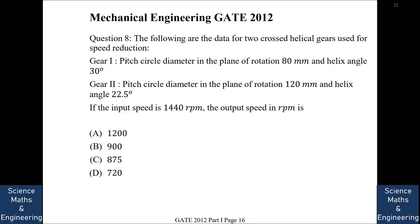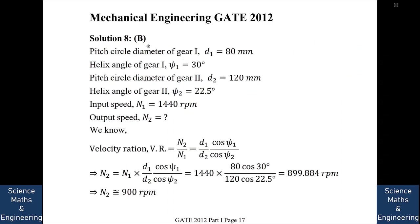For two crossed helical gears used for speed reduction: the pitch circle diameter in the planar rotation is 80 mm and the helix angle is 32.5 degrees. Using the velocity ratio formula N2/N1 = (D1/D2)·(cos φ1/cos φ2), and substituting the helix angle and pitch circle diameter values, we get N2 = 899.884 rpm, which is approximately 900 rpm. The answer is C.